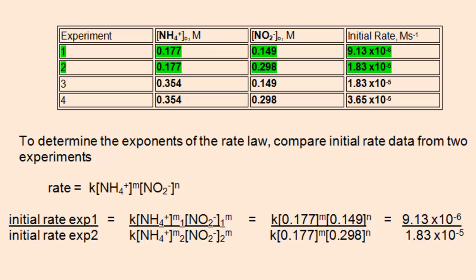To determine the exponents of the rate law, compare initial rate data from two experiments. We're using the rate law equation and the properties of math to help us determine the exponents. Set up the initial rate of one experiment over the initial rate of another experiment. The way to choose your two experiments is to select two experiments where one of the reactant concentrations is held constant, and the other reactant concentration varies.